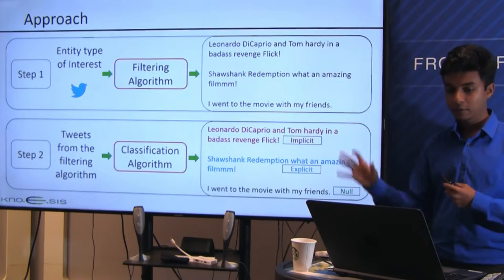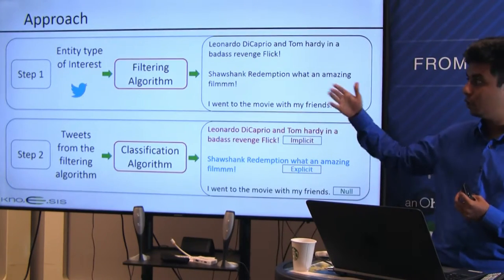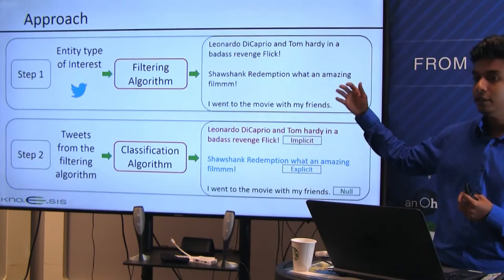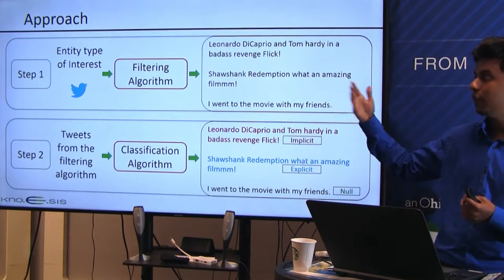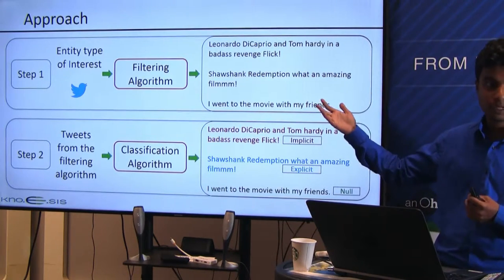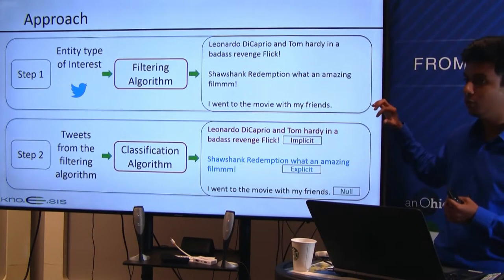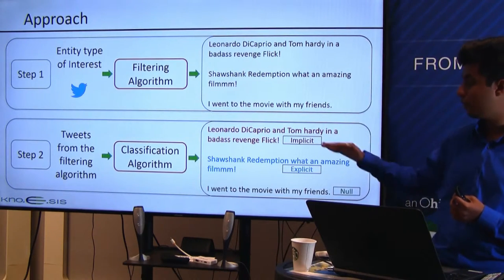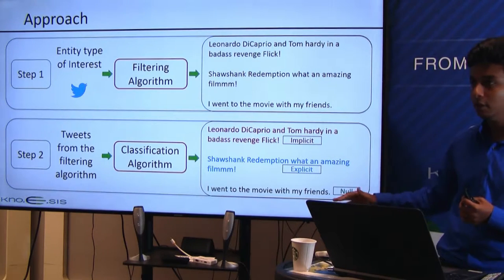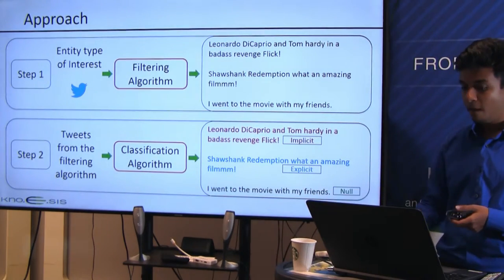With this, I have explained how we identify semantic cues for each entity type, stream those tweets, and classify each tweet into one of three classes — implicit, explicit, or null — using a set of five features.